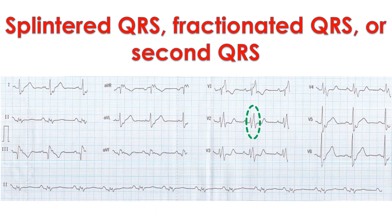Earlier, the descriptions for the QRS abnormality in Ebstein's anomaly were splintered QRS, fractionated QRS, or second QRS. Intracardiac mapping has demonstrated late depolarization during this period.